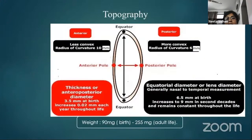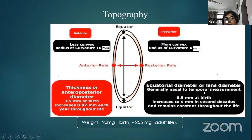The lens has both an anterior and posterior curved surface. The anterior surface is less convex than the posterior, and the center of these surfaces is referred to as the anterior and posterior pole. The distance between the poles is measured as the antero-posterior diameter or thickness. As the lens grows with age, it is this dimension that increases in size. The equator, measured from the nasal to the temporal aspect, refers to the marginal circumference of the lens. It is about 6.5 millimeters at birth, increases to about 9 to 10 millimeters in adult life, and after that remains constant.